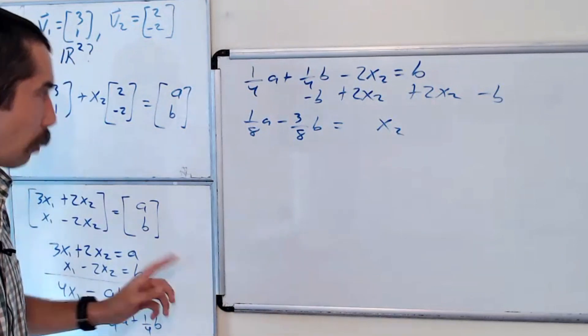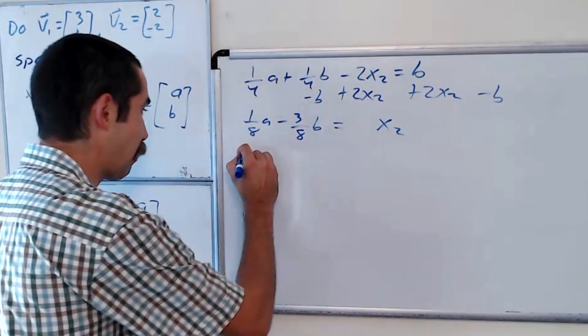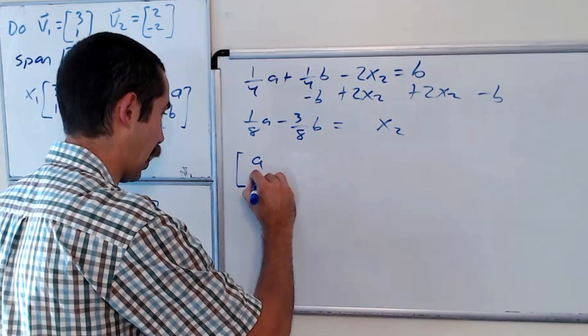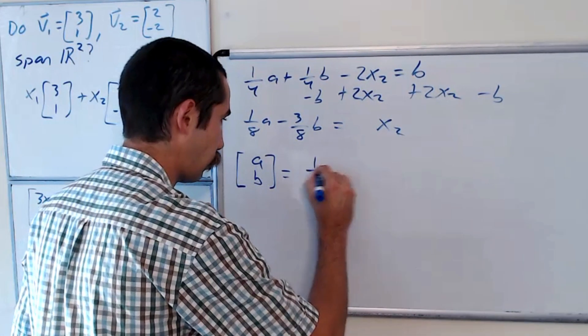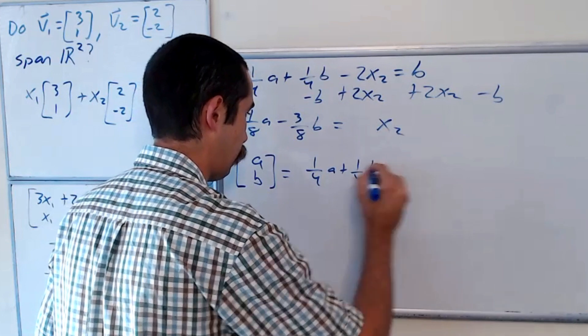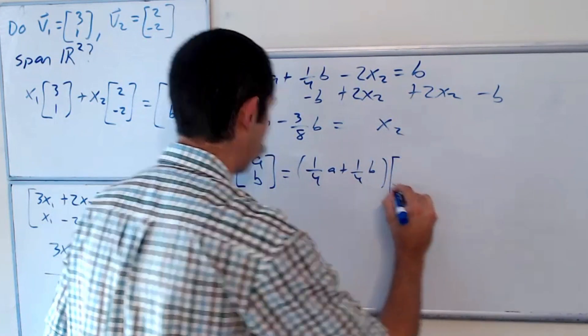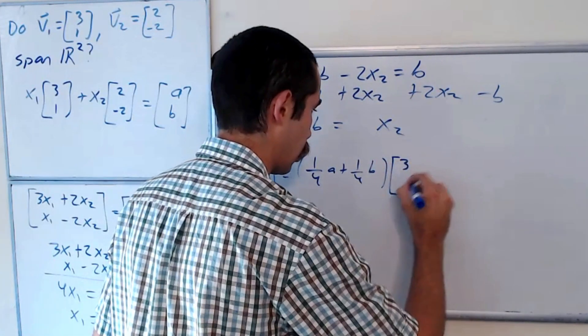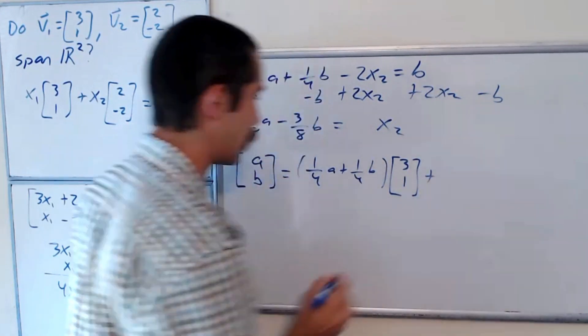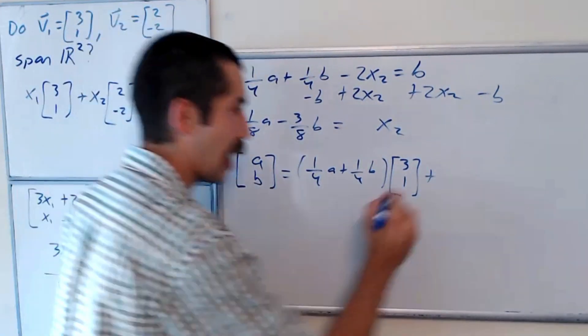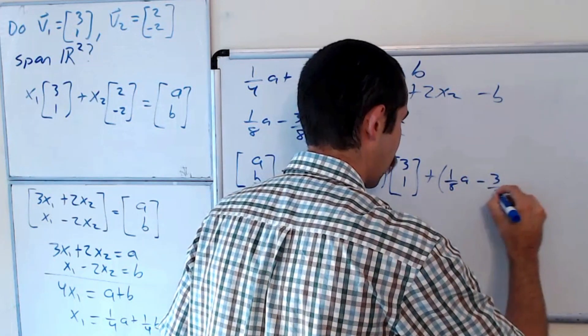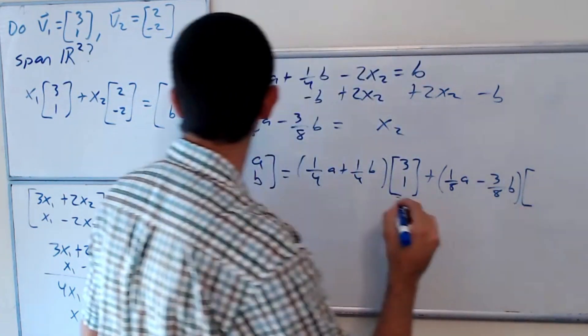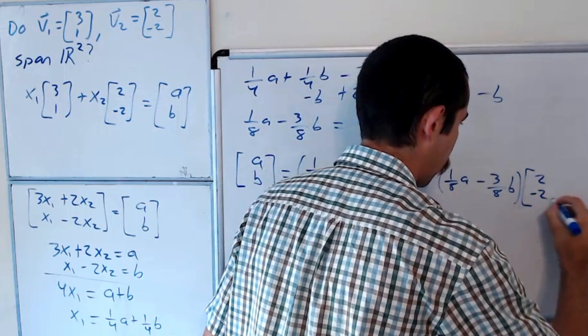So to recap, what did we show? We showed that any vector in R2, ab, is equal to one-fourth a plus one-fourth b times our first vector, which was 3, 1, plus one-eighth a minus three-eighths b times our second vector, which was 2, negative 2.